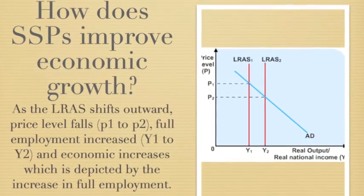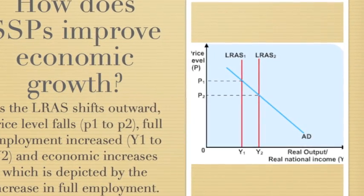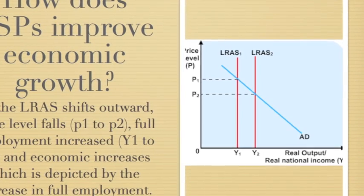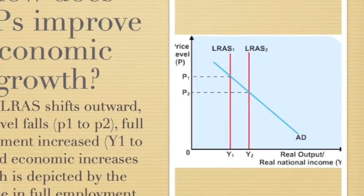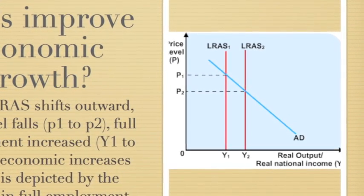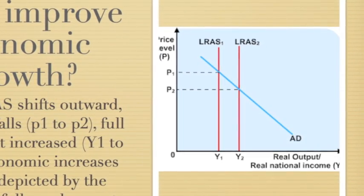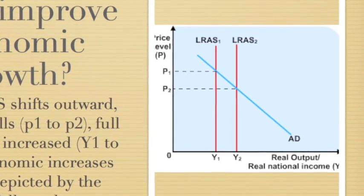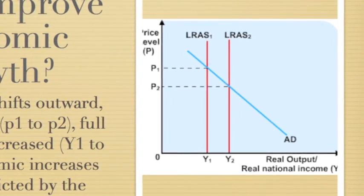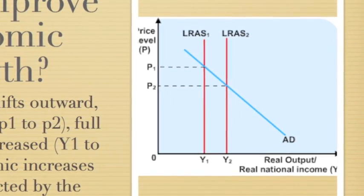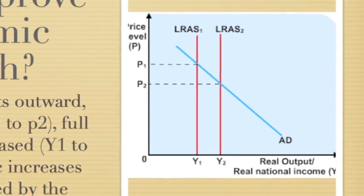Now it's important to see how supply side policies actually improve economic growth. From the diagram, these policies increase productivity in an economy and push long-run aggregate supply outwards from LRAS1 to LRAS2. As a result, there is a decrease in the price level, and economic growth increases from Y1 to Y2. That's how economic growth actually increases — supply side policies increase the total productivity of goods and services in an economy.